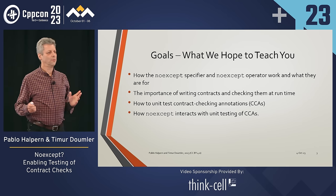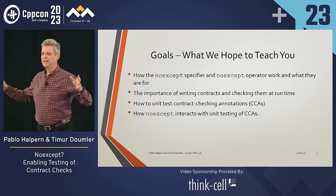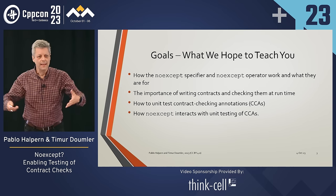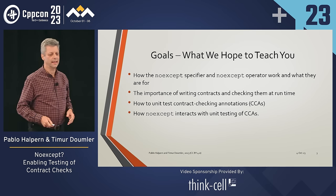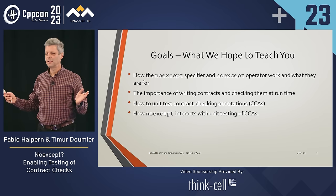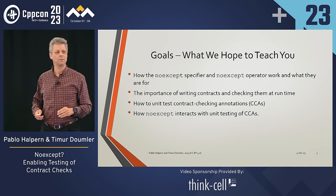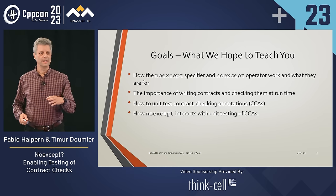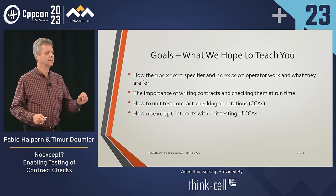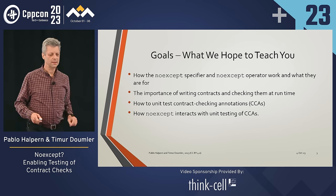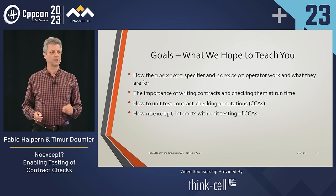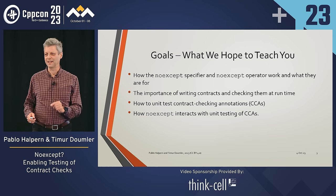We're going to be talking about three somewhat independent things and then tying them together. We're going to talk about the noexcept specifier, which at first may seem unrelated to contracts but in fact is very important. Then we'll talk about writing contracts themselves, and then how to test those contract annotations. Finally, we'll look at how noexcept interacts with the testing of contract checking annotations.